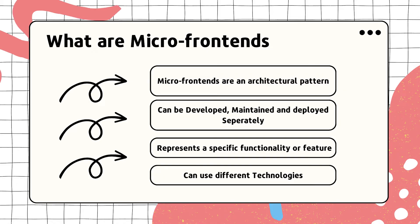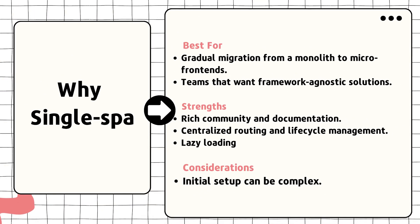Let's move to why Single SPA. Out there there are a couple of frameworks, but today I'm talking only about this one. It will be ideal for doing the migration from monolithic to micro frontends. If your team wants to have multiple technologies, you can go with Single SPA — for example, two micro frontends, one initialized with React and another with Vue.